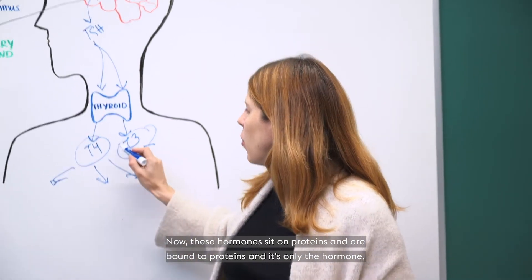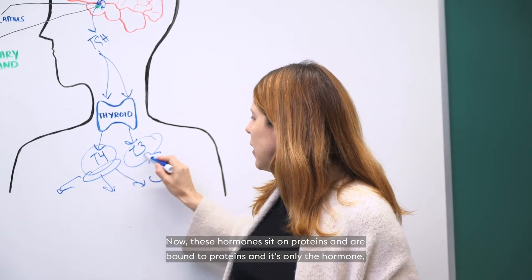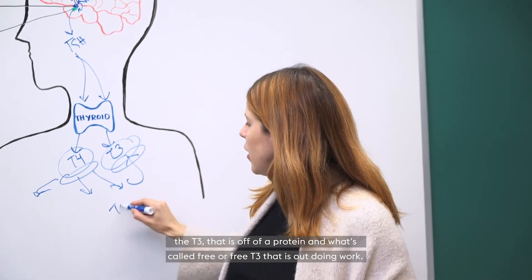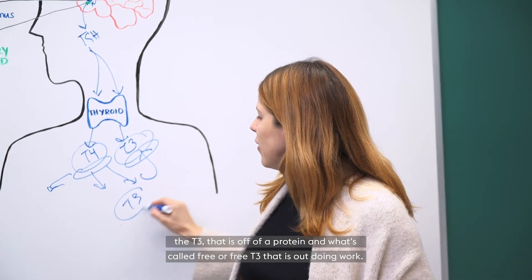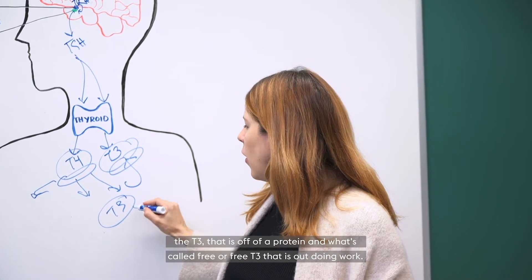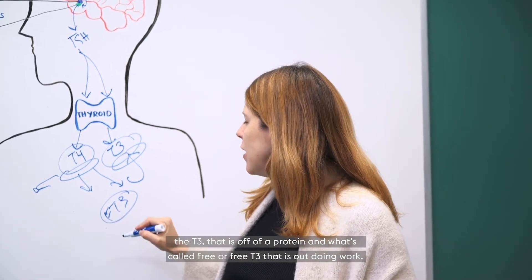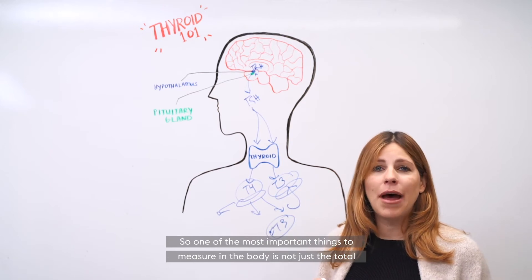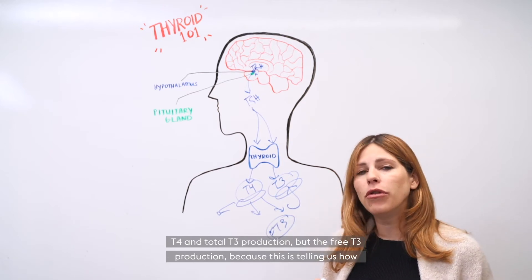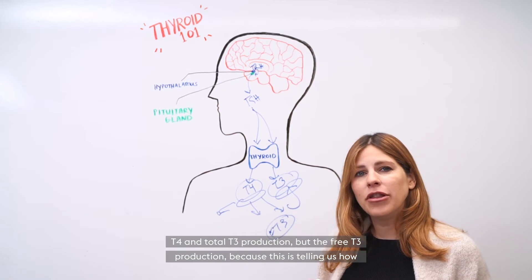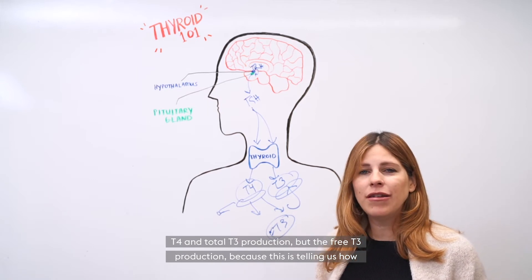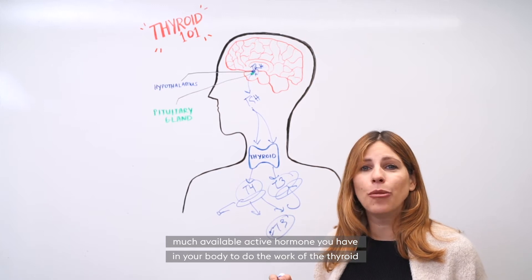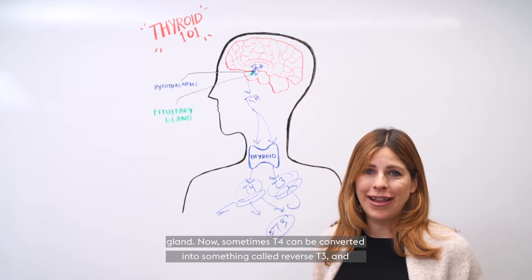Now, these hormones sit on proteins and are bound to proteins. And it's only the hormones, the T3, that is off of a protein and what's called free or free T3 that is out doing work. So one of the most important things to measure in the body is not just the total T4 and total T3 production, but the free T3 production, because this is telling us how much available active hormone you have in your body to do the work of the thyroid gland.